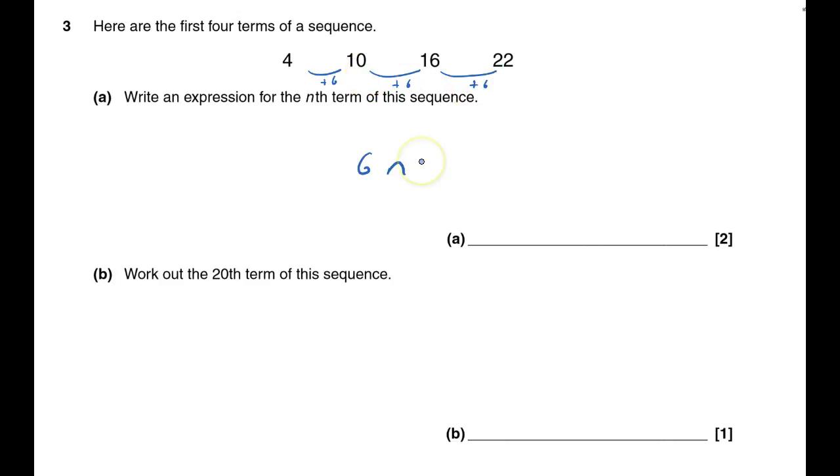The nth term will be 6n and then plus or minus something. First term is 4. 6 times 1 is 6. How do I get to 4? I need to take away 2.